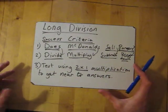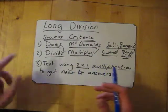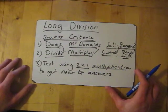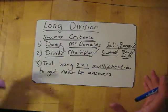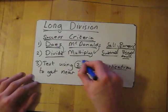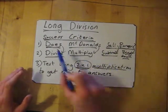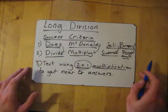I'll show you how to work that into doing your long division, and then how to test. The reason we do long division is because we don't know the times tables for the numbers we're using to divide, so you use a quick 2 by 1 multiplication to check what the answer is. Remember: Does McDonald's Sell Burgers - Divide, Multiply, Subtract, Bring down.